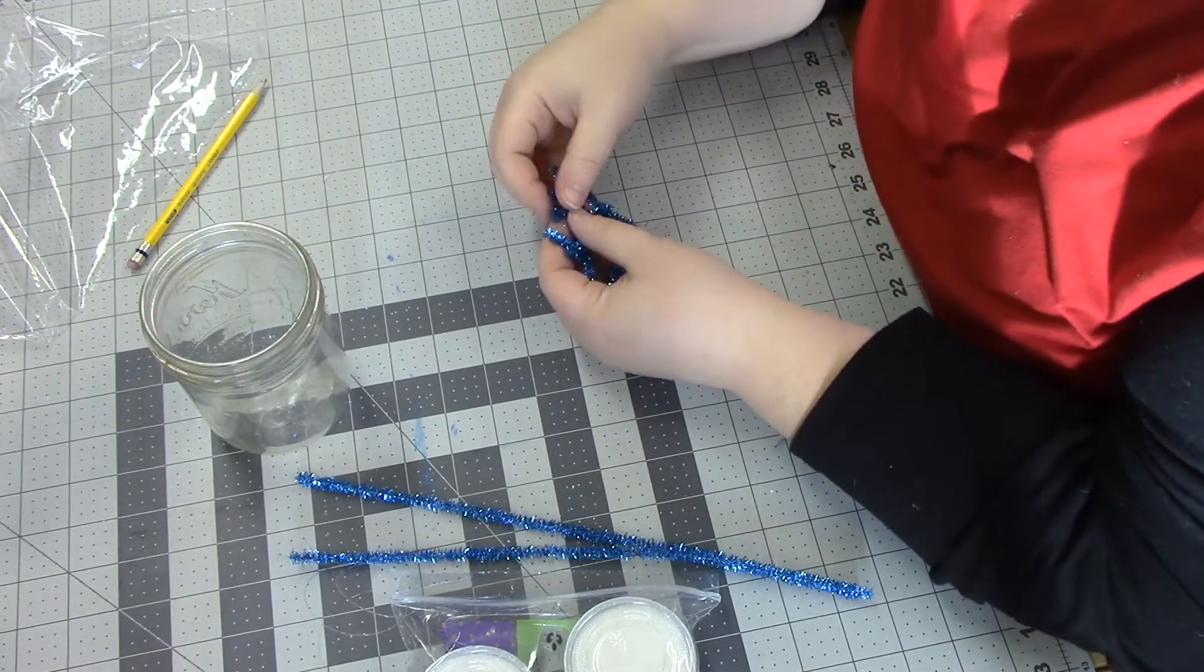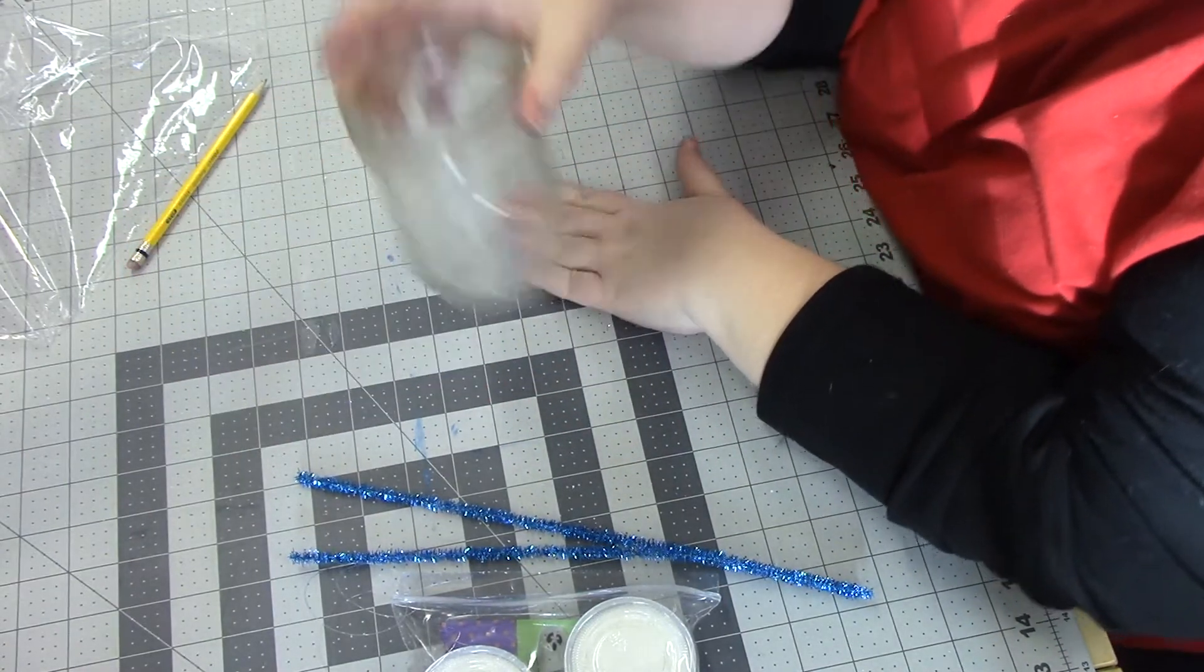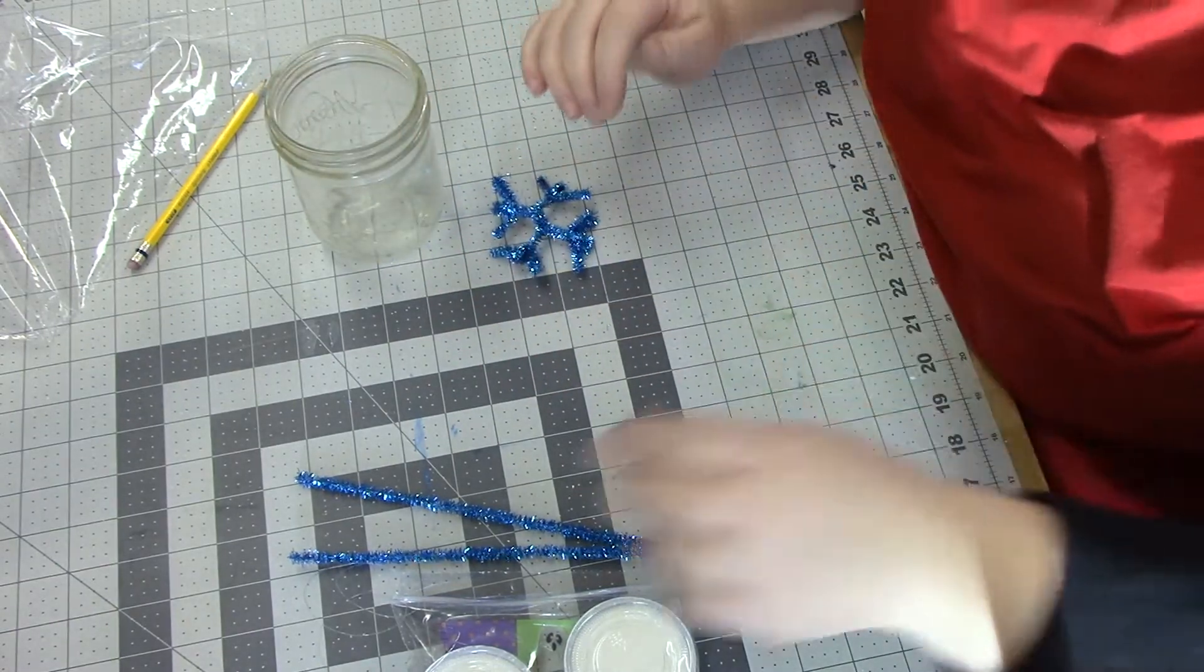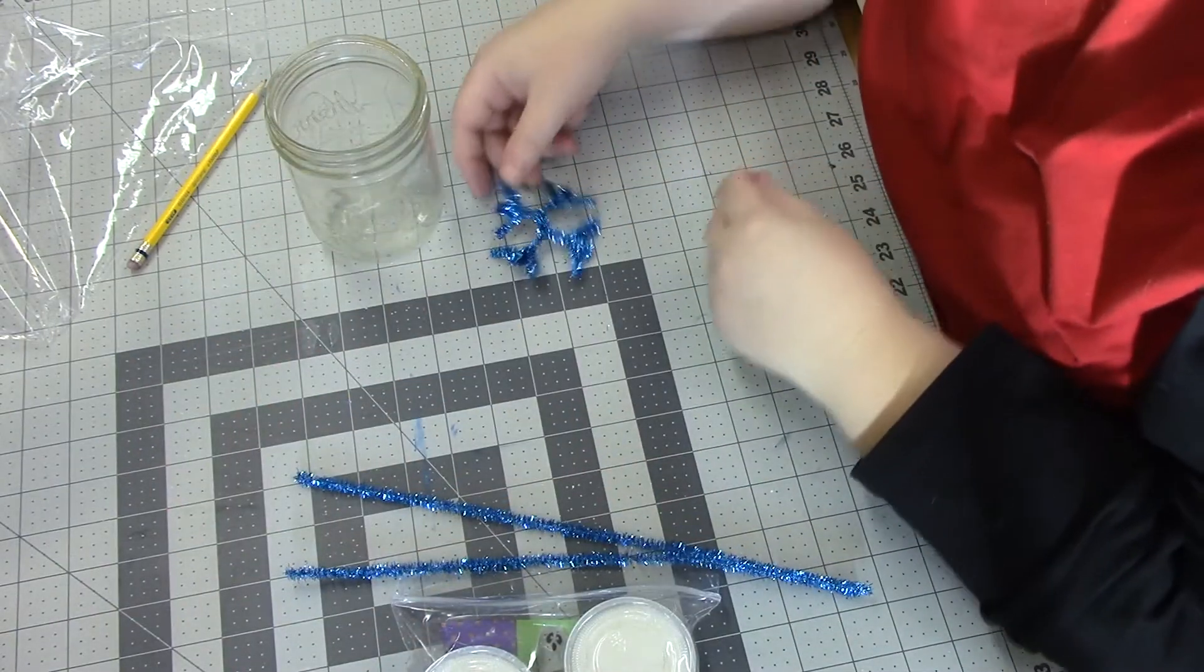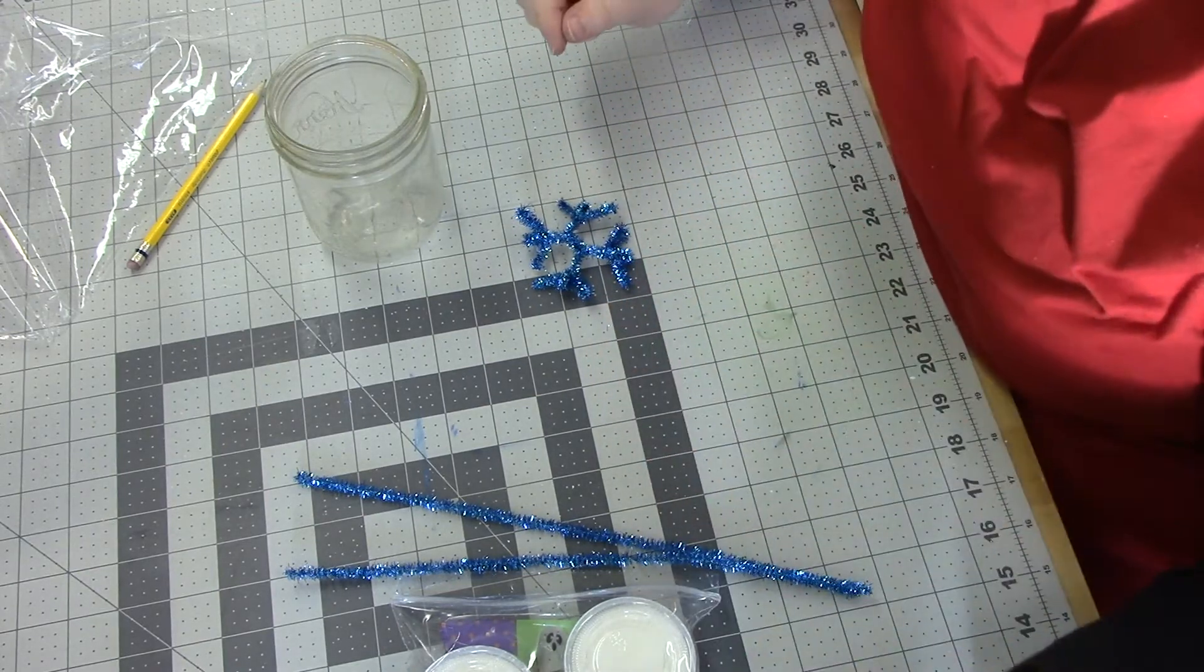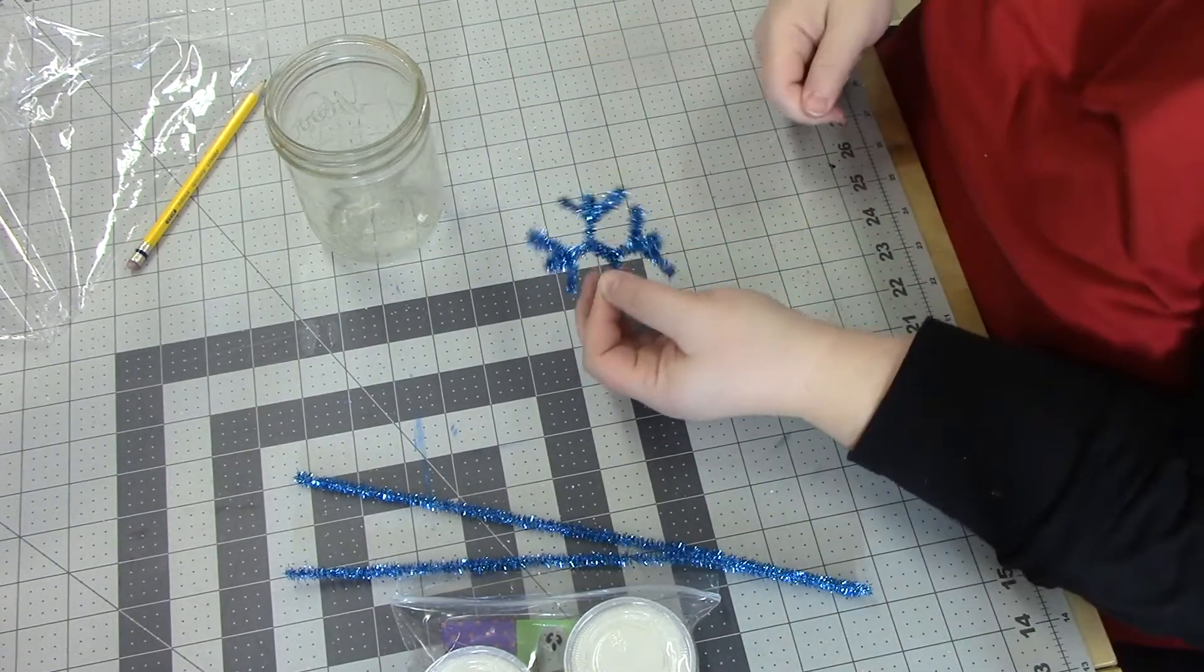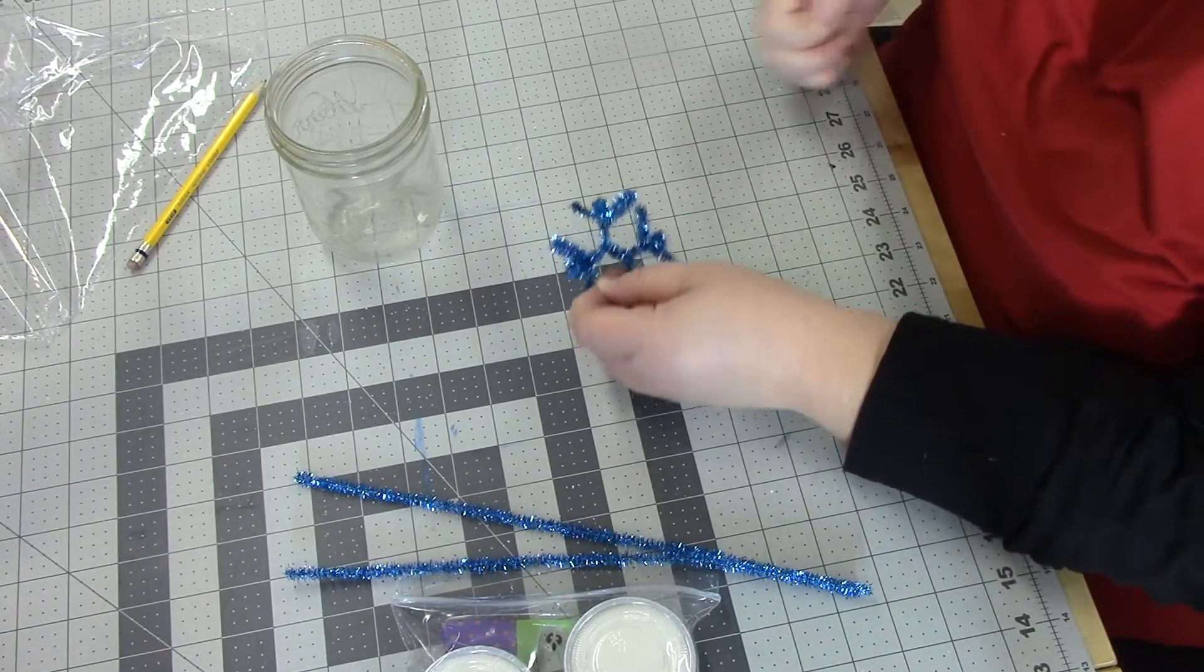Okay, the next step before you put your detergent and hot water in your cup is to use the fishing line. You're going to tie a bit to your pipe cleaners and then you're going to tie the other end to your chopstick. There we go, now we have a knot.